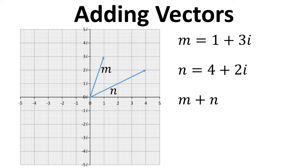So m plus n—to add vectors you need to move the tail of one vector to the head of the other vector, and we've done that there. So we can do this graphically and we see m plus n, but we can also do it with the complex numbers.